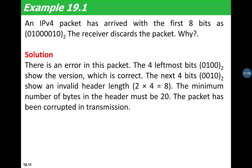Example 1: An IPv4 packet arrives with the first 8 bits as 0100 0010. The first 4 bits (version) are 0100 = 4 (valid IPv4). The next 4 bits (HLEN) are 0010 = 2, so header length = 2 × 4 = 8 bytes. The receiver discards the packet because the minimum header length must be 20 bytes — a header of only 8 bytes means the packet was corrupted in transmission.